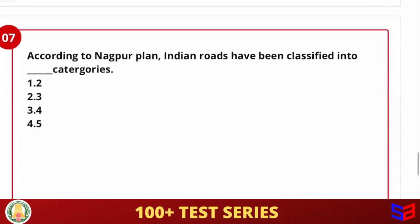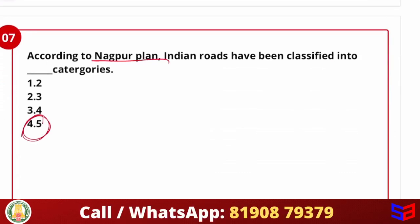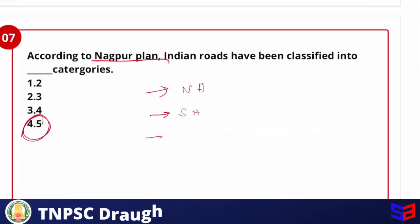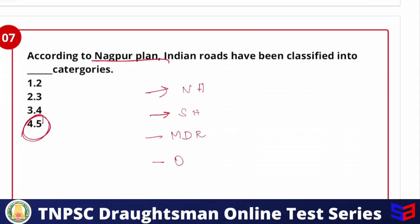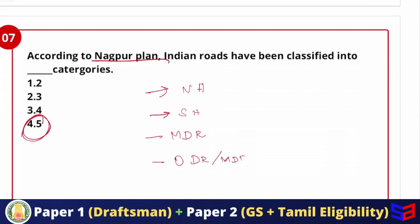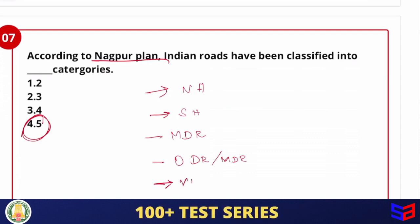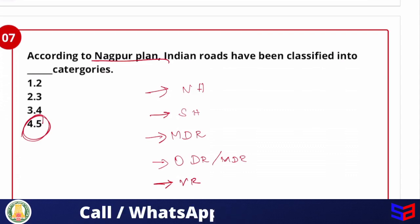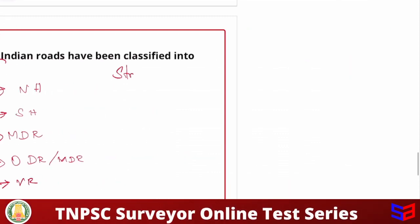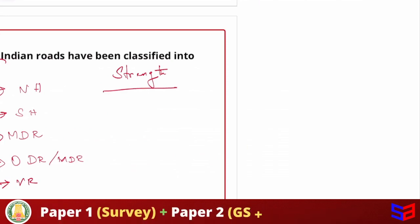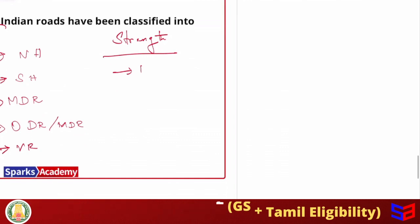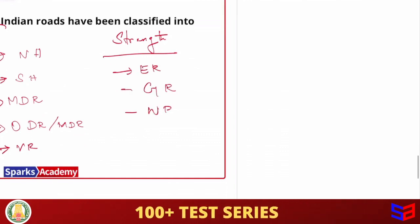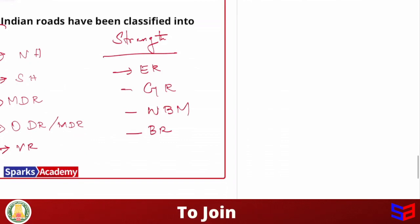According to the Nagpur Plan, Indian roads have been classified into 5 categories: National Highway, State Highway, Major District Road, Other District Road, and Village Road. Roads are also classified based on strength of pavement: Earth Road, Gravel Road, Water-bound Macadam, Bituminous Road, and Cement Concrete Road — with strength increasing in that order.